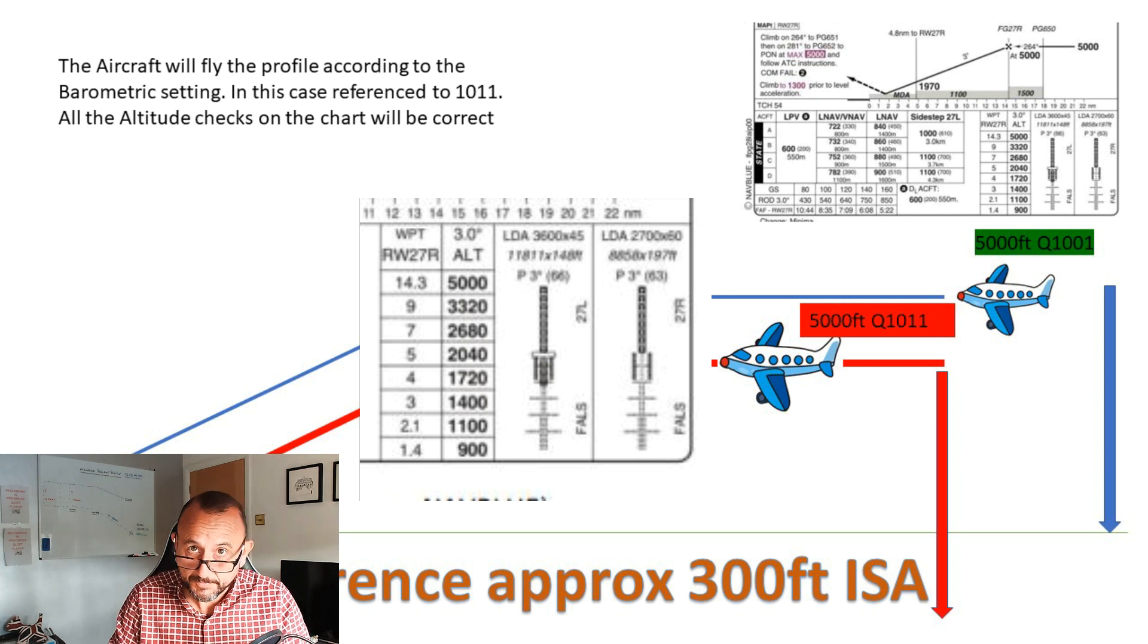For the aircraft to fly down a beam that is in the FMGC based on baro only. If that baro's incorrect, then the profile is going to be incorrect. This is why it's really important to make sure that we set the right QNH.